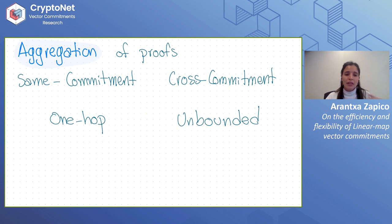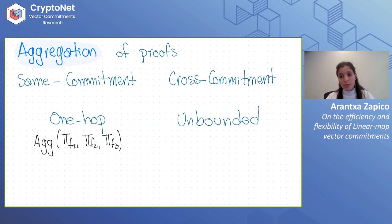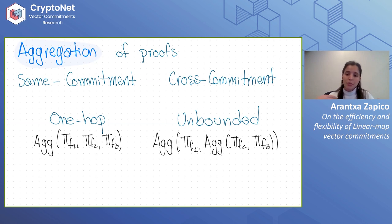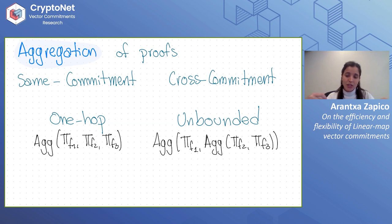Independently, aggregation can be one-hop or unbounded. In one-hop aggregation, we can only aggregate fresh proofs and then stop — once we aggregate two proofs, that's all. In unbounded aggregation, we can also aggregate already-aggregated proofs. We call this unbounded rather than incremental because, in incremental aggregation the order doesn't matter, but for our result the order of aggregations does matter, as we'll see later.